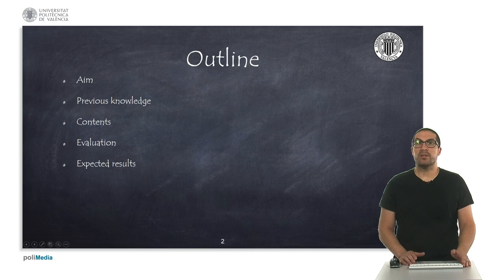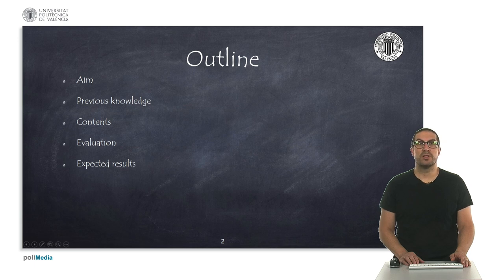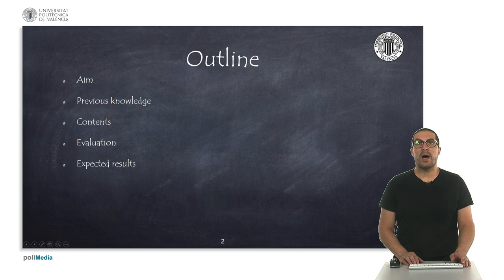This is the outline of the presentation. First, I will describe the aim of the course and some of the previous or recommended knowledge. Then I will move on to the course contents and how it will be evaluated. Finally, I will talk about the expected results that we hope you will achieve by the end of this course.